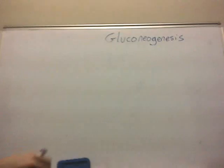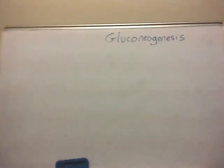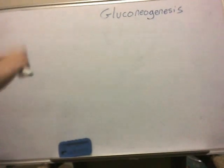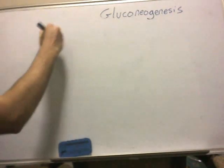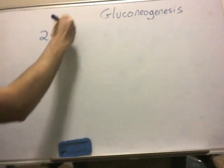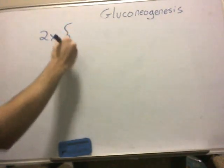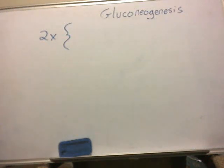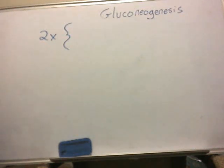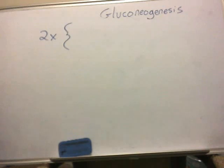Now, if you remember last time, about halfway through, we put a 2x to signify that we had two three-carbon molecules from the original six-carbon molecule glucose. This time we're going to start off with two three-carbon molecules of pyruvate.